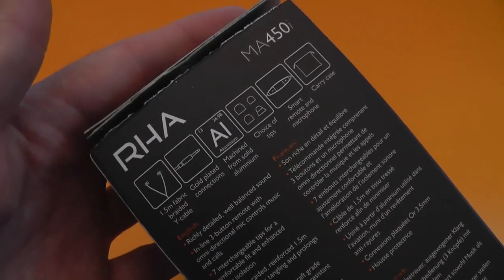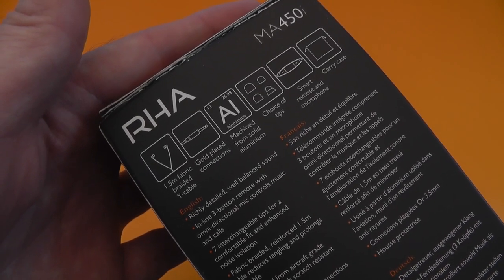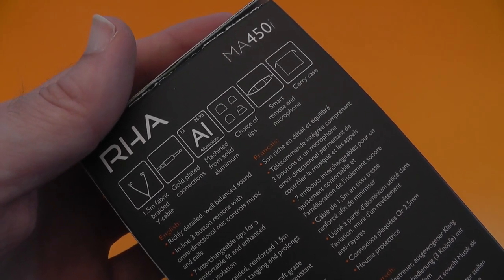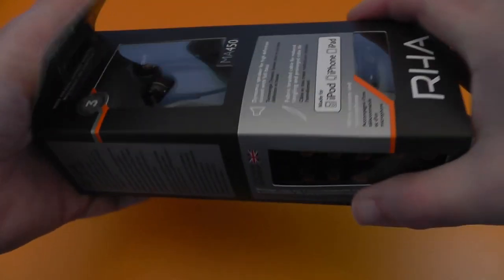We've got some features up the top here. You can see a 1.5m fabric braided wire cable, gold plated connections, machined from solid aluminum, choice of tips, smart remote and microphone, and a carry case included as well.